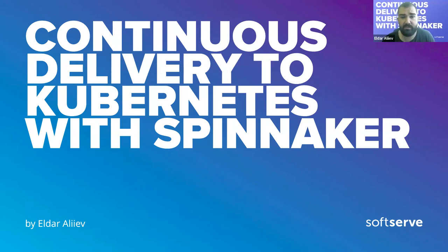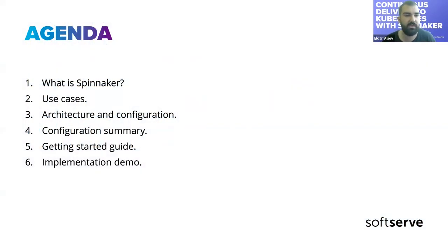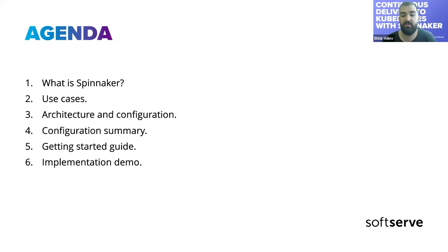Today we will talk about Spinnaker. Most of you have probably heard about this tool but haven't had a chance to try it because it's slightly heavy. I hadn't the chance to cover this topic before because I didn't have enough resources on my laptop, but now we have the opportunity. Our agenda covers: what Spinnaker is, its main constraints, possible use cases, why we need it, how to implement it in CICD processes, a bit about architecture, main configuration items, additional tutorials, and then we'll jump to the implementation demo.